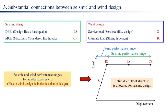For seismic design: Design Basis Earthquake (DBE) corresponds to Life Safety (LS); Maximum Considered Earthquake (MCE) corresponds to Collapse Prevention (CP). For wind design: service load / serviceability design corresponds to Operational (O); ultimate load / strength design corresponds to Immediate Occupancy (IO). The seismic and wind performance ranges for an idealized system involve elastic wind design and inelastic seismic design, where the entire ductility of the structure is allocated for seismic design.